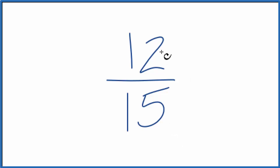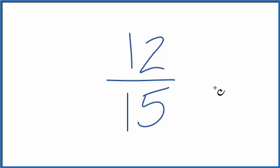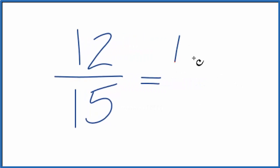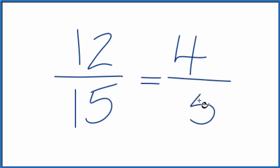3 might go into 12 and 15. 3 times 4 gives me 12, and 3 times 5 gives me 15, so 3 is the common factor. Let's divide 12 by 3 — that gives us 4 — and 15 divided by 3 gives us 5. So when we simplify 12 fifteenths, we get 4 fifths.